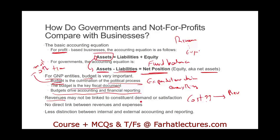Also, revenues may not be linked to the voters' demand or satisfaction. When we impose taxes, it doesn't mean if you pay more taxes you're going to get more services. There is no link between paying more taxes and getting more services — you have to pay taxes because you have to pay taxes. In a business, when you pay for something you get a better product or service, but not so for government.